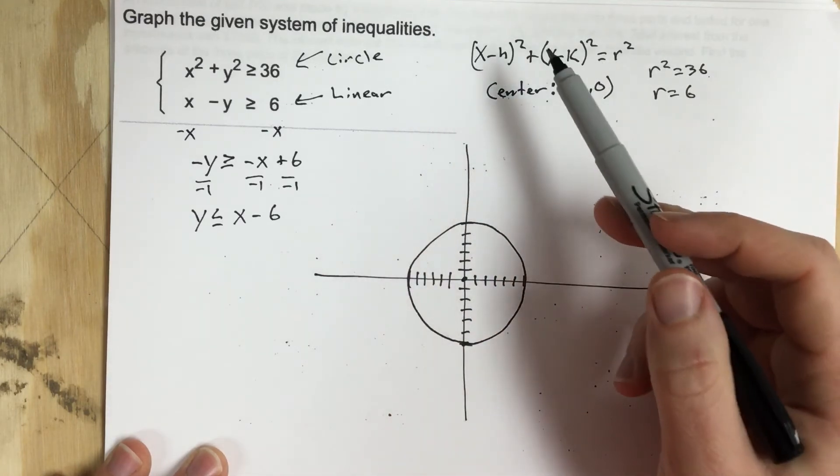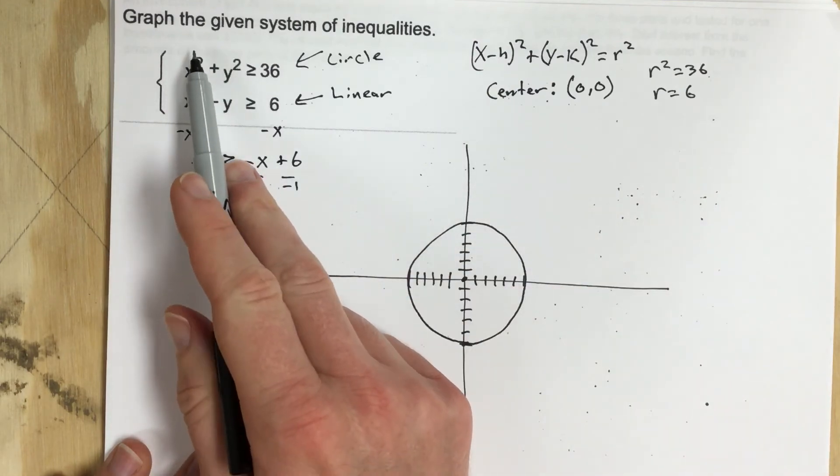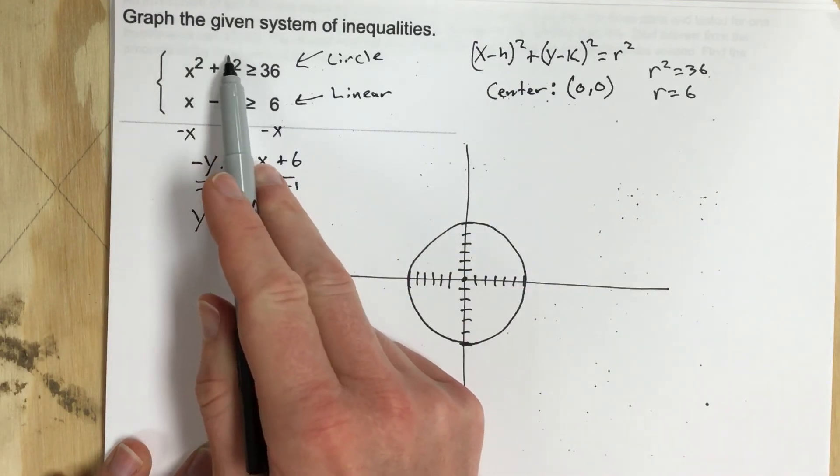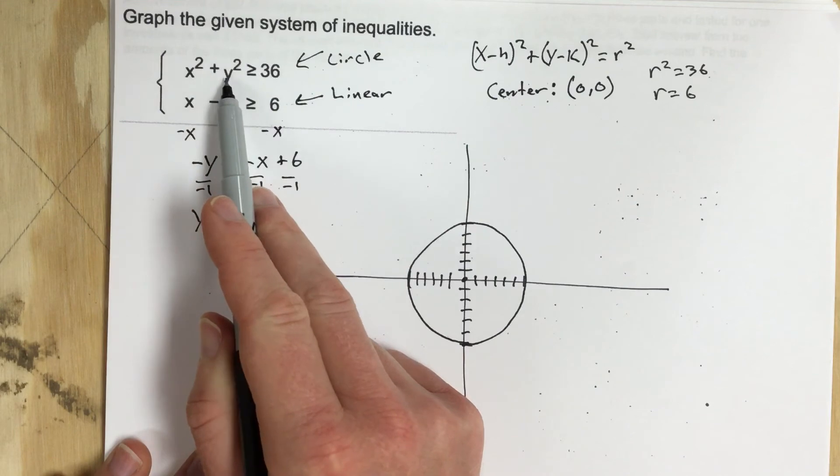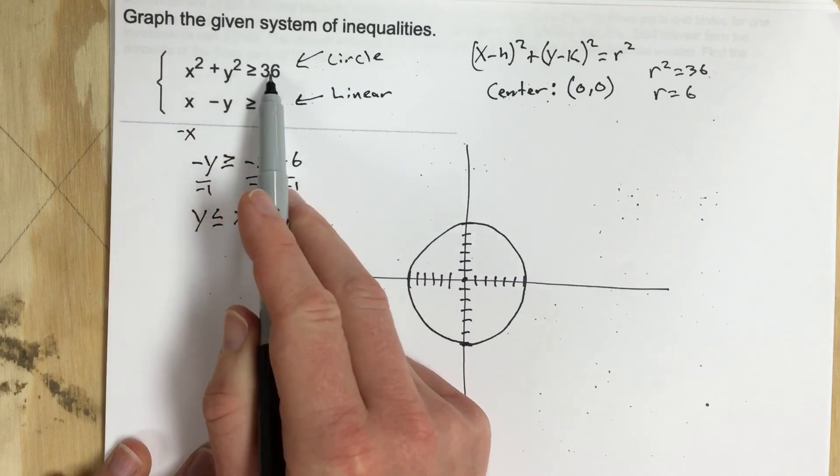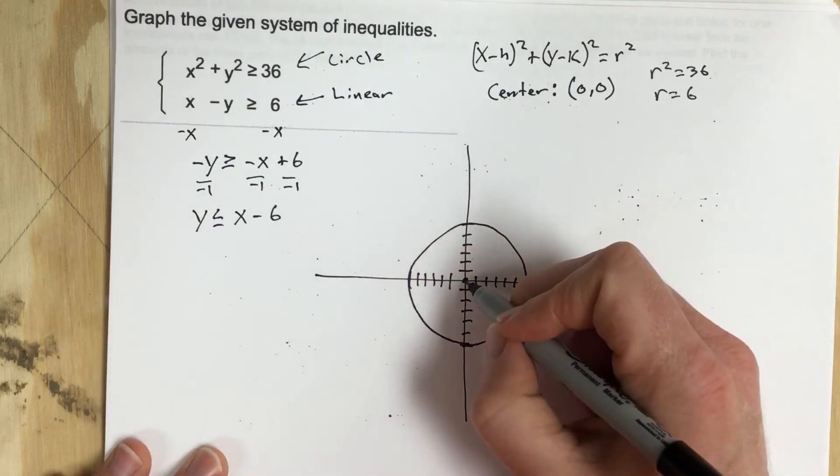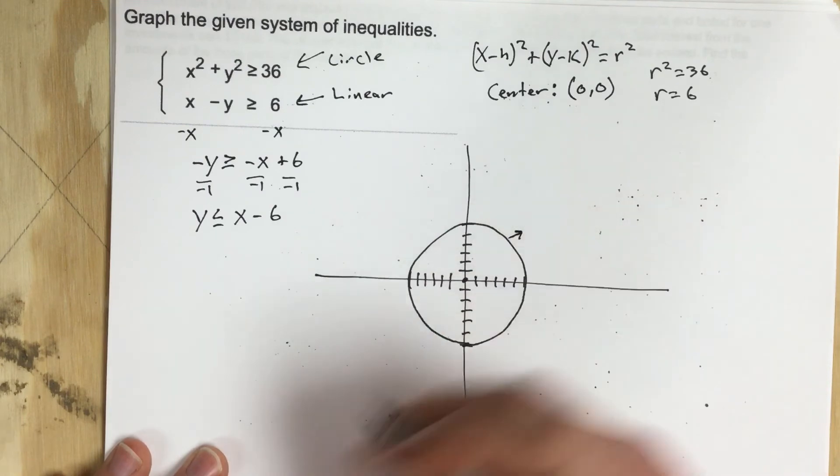And where do I shade it? Well let's test the 0, 0 solution. So if I plug in 0 and 0, 0 squared plus 0 squared is 0 greater than or equal to 36. No. So 0, 0 is not a solution. So I'm going to shade the outside of it.